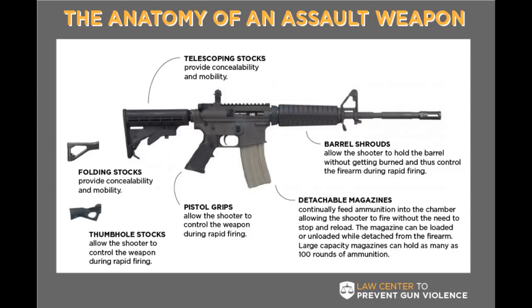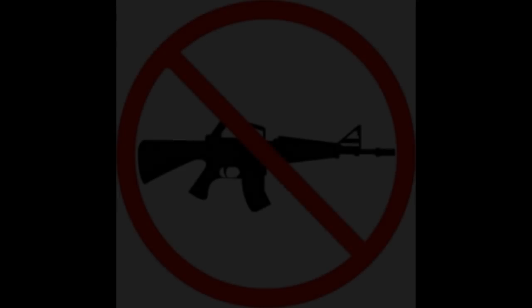Additional attributes include a threaded barrel which can accept devices such as a flash suppressor, suppressor, compensator, or muzzle brake; a grenade launcher; and a barrel shroud which prevents burning of a shooter's arm or hand as a safety device.